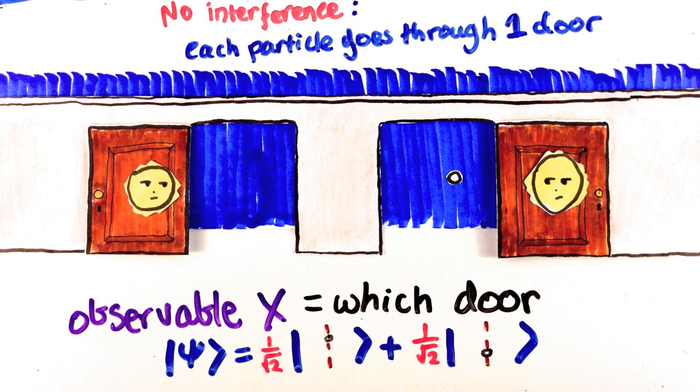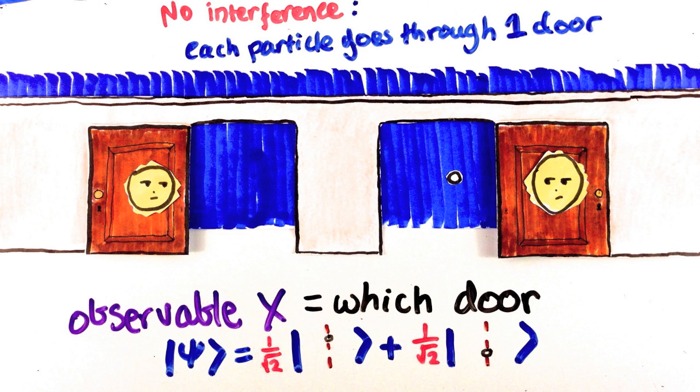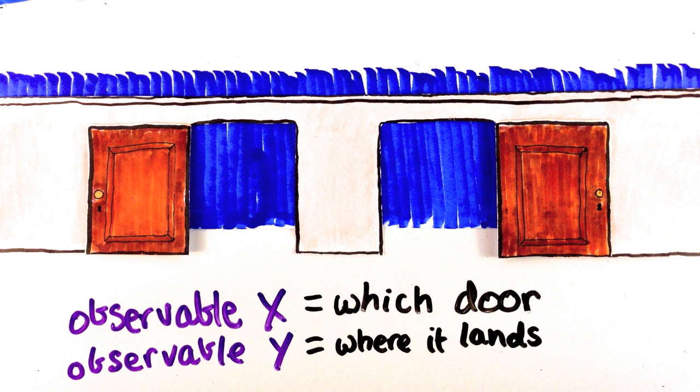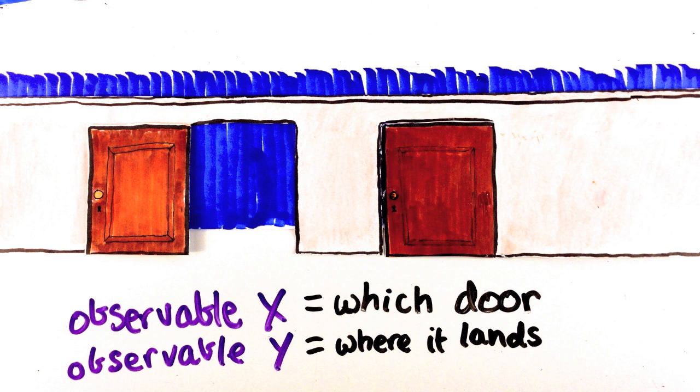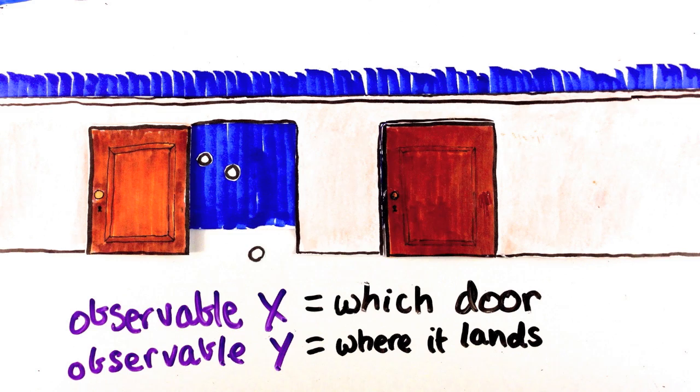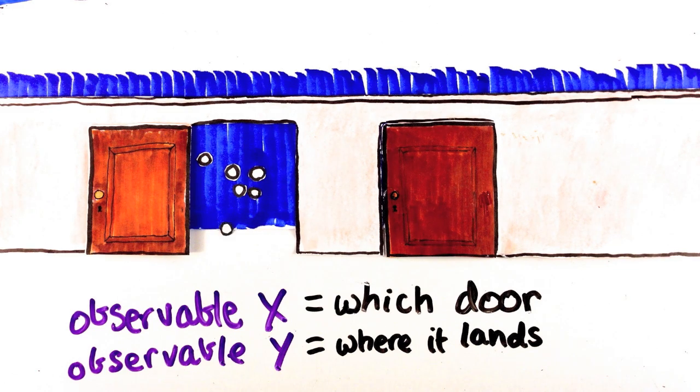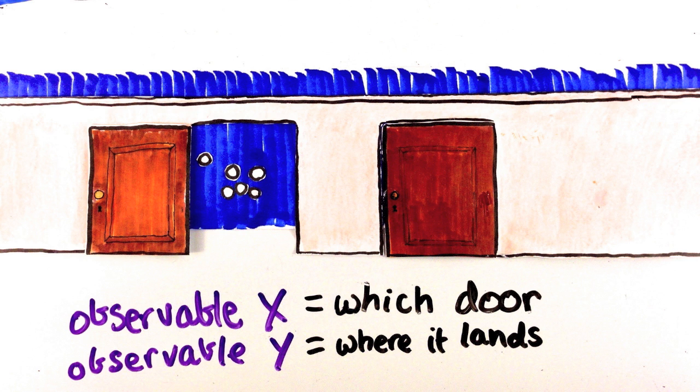But we know that that isn't the case, and we can show it by measuring something else instead. The observable y is where the particle lands on the far wall. We know that if the particle goes through one door, it lands somewhere behind that door. So if we believe that it really only went through one door, but we just didn't know which, we'd expect two blobs behind each door. Of course, that's not what we get. In other words, we got interference.